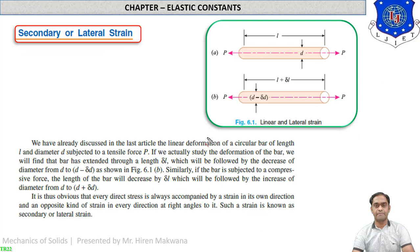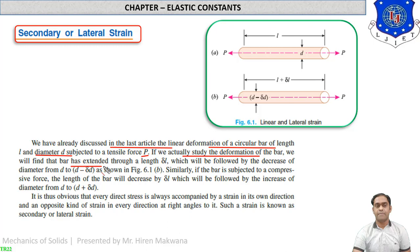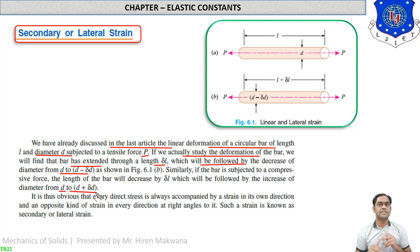If we study the deformation of the bar, we find it has extended by delta-l in length, followed by a decrease in diameter from d to d minus delta-d. Similarly, if the bar is subjected to compressive force, the length decreases and the diameter increases. So change in length is primary strain, while change in diameter is secondary or lateral strain.